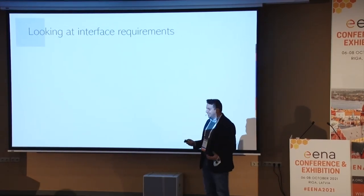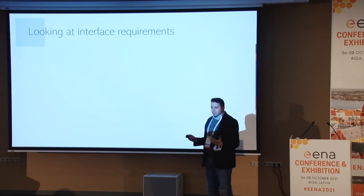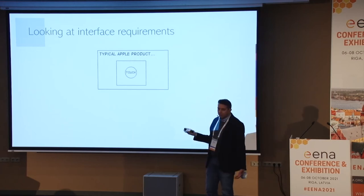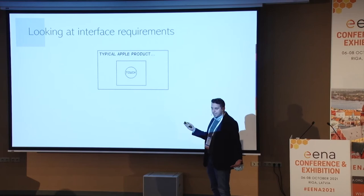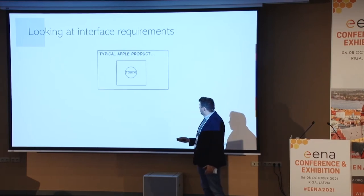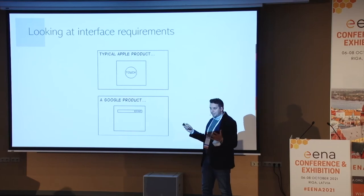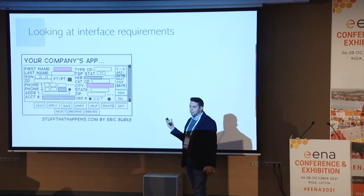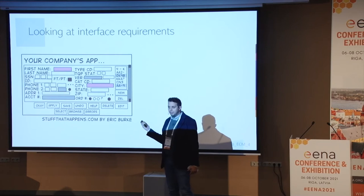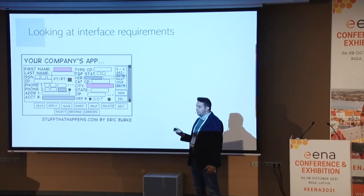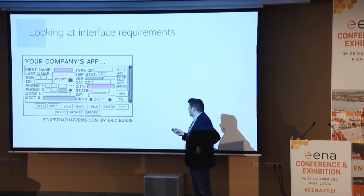Let's start with a brief joke. Looking at user interfaces, we all know how the CAD user interface is made. We all use smartphones, tablets, and websites. The layout of a typical Apple product is very simple — one button, one action, easy, linear. A typical Google product: I can search, I see the list of results, plain, I know what to find and where. And then we have our company's app, our computer-aided dispatch — something we have to deal with every single day.